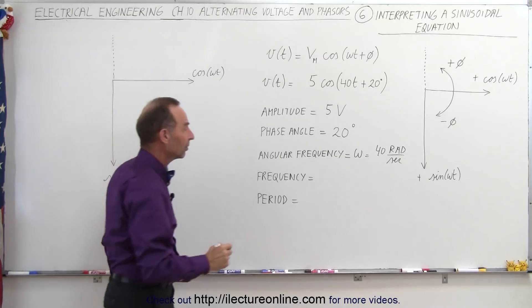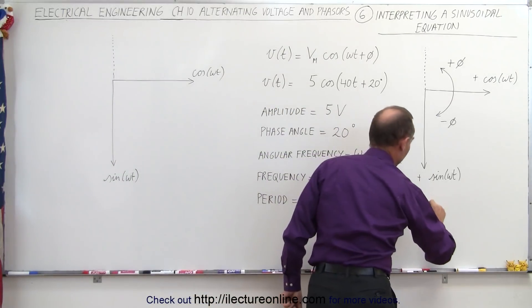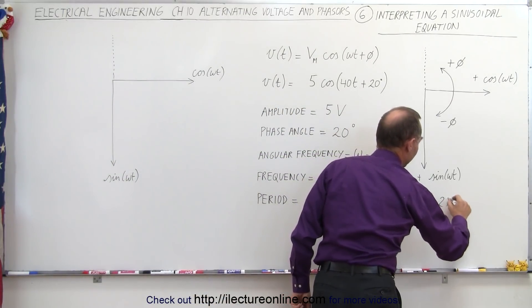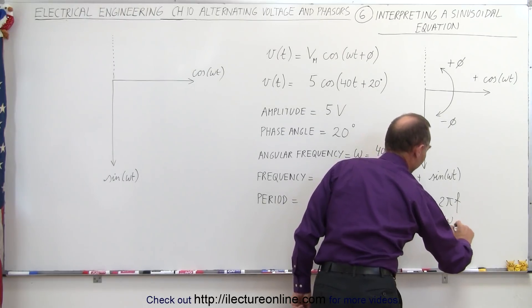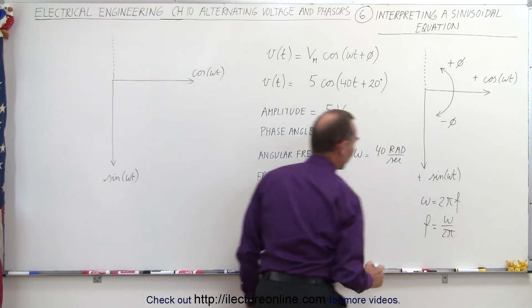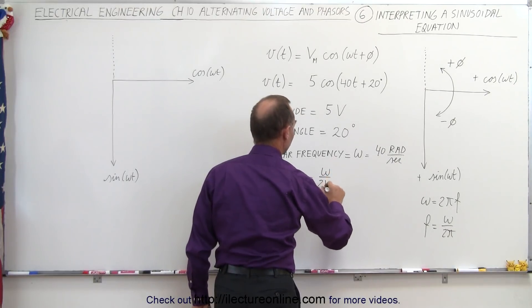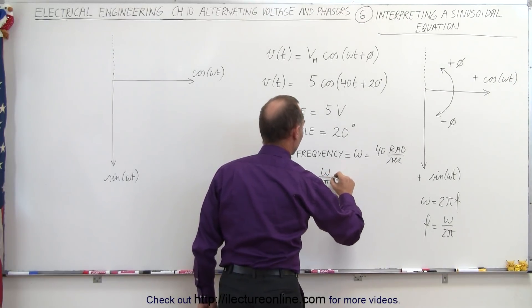Now the frequency. Well it turns out that the angular frequency omega is equal to 2 pi times the frequency, therefore the frequency is equal to omega divided by 2 pi. If you go ahead and plug that in here, omega divided by 2 pi, we then have 40, that's equal to 40 radians per second, divided by 2 pi.